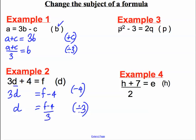Two more examples. Here, P squared subtract 3 equals 2Q. I want to make P on its own the subject of this formula. Well, let's start off by making P squared the subject. Let's undo this subtract 3 by adding 3 to both sides. If I did that, I would have P squared equals 2Q plus 3.